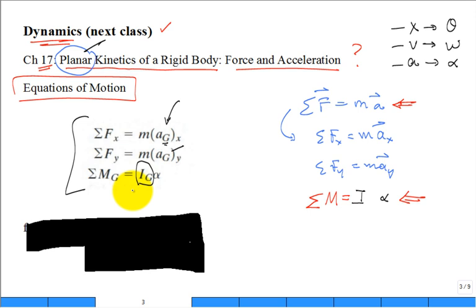And so this is the mass moment of inertia about the center of gravity for that object. Now, a lot of times, things don't always rotate around the center of gravity. They rotate around a different point, shifted away, parallel axis theorem.